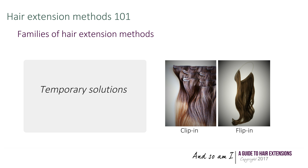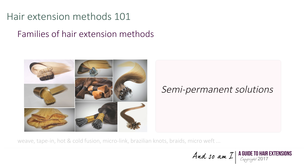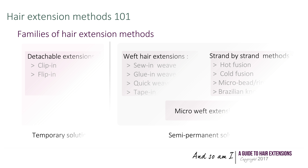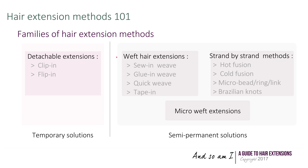Hair extension methods can be classified in two main categories: temporary solutions and semi-permanent solutions. Temporary solutions such as clippings or flippings allow you to remove your extensions as fast as you fix them in your hair. On the other hand, semi-permanent solutions like weave, taping or hot fusion are long-lasting options which can be worn for weeks and even months.